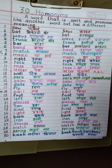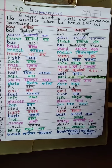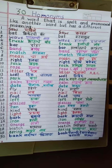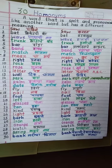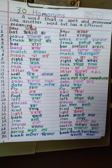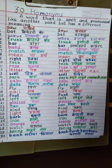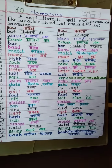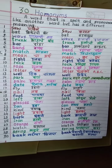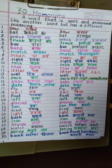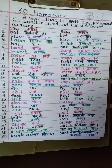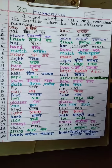Hello friend. Today we are going to learn homonyms — 30 homonyms. A word that is spelled and pronounced like another word but has a different meaning.